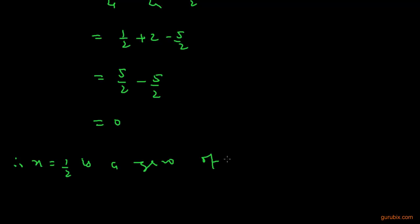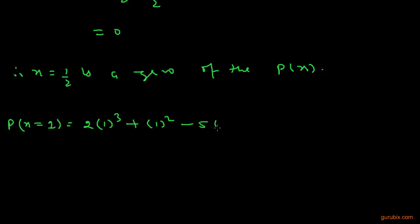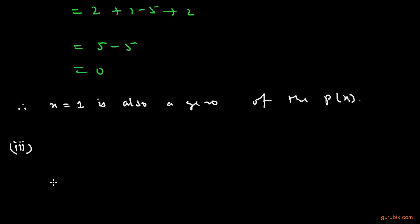Now we shall check for x = 1: p(1) = 2 × 1³ + 1² - 5 × 1 + 2, which equals 2 + 1 - 5 + 2. This is 5 - 5 = 0. We conclude that x = 1 is also a zero of the given polynomial p(x).